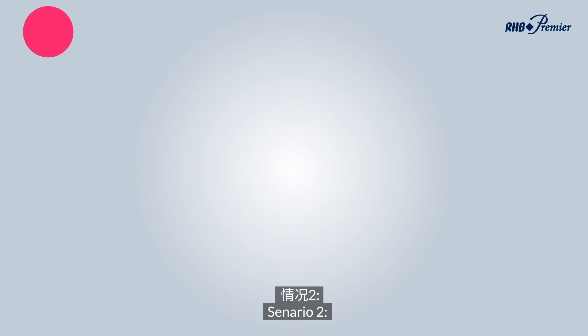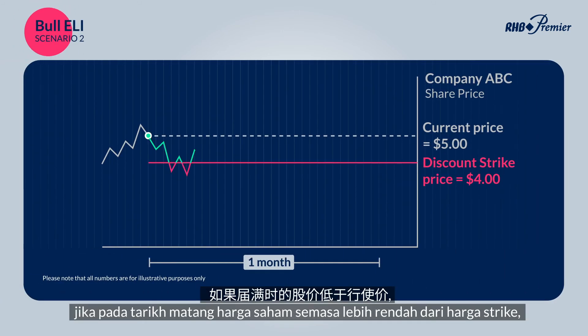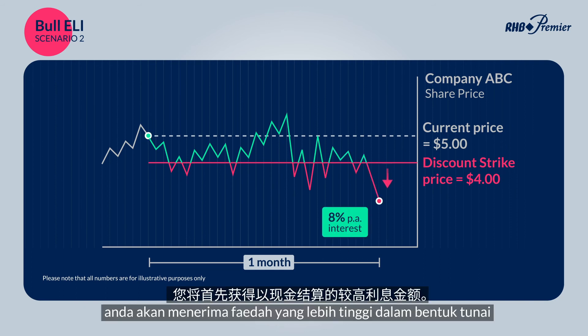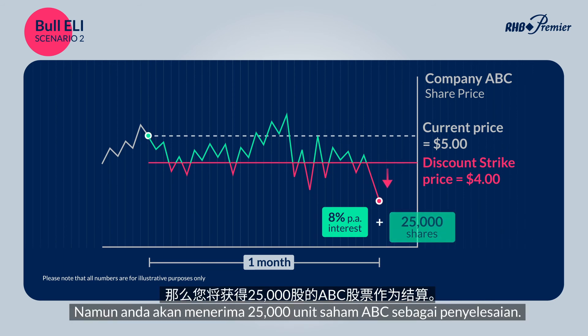In Scenario 2, if the share price at maturity is below the strike price, you will first receive your higher interest in cash. Your full initial investment will be converted to ABC shares at $4, and you will receive 25,000 ABC shares as settlement.